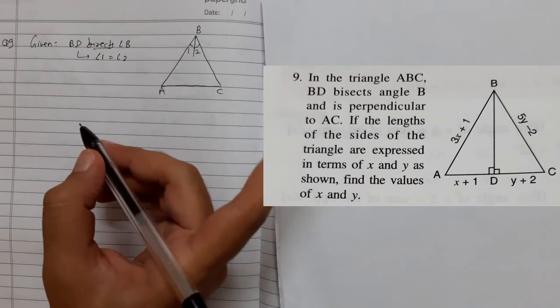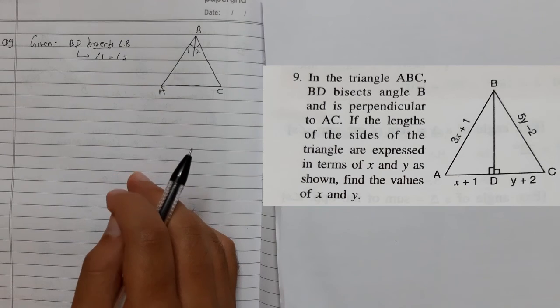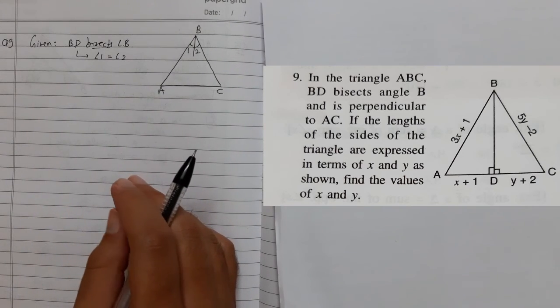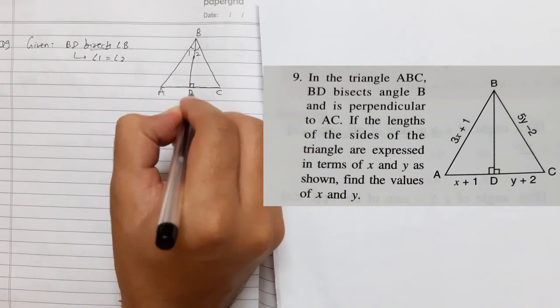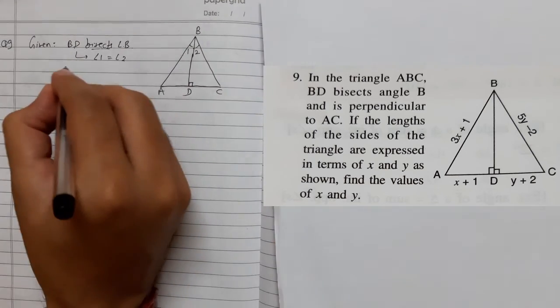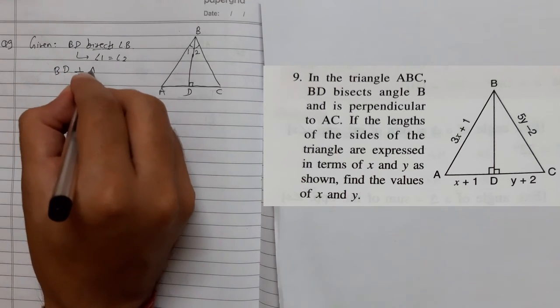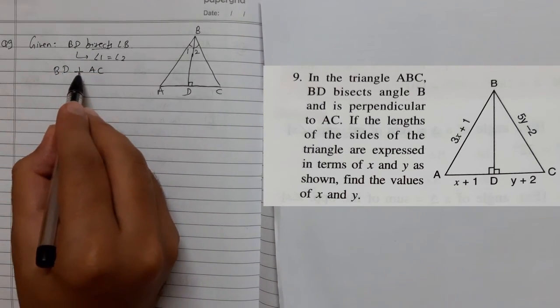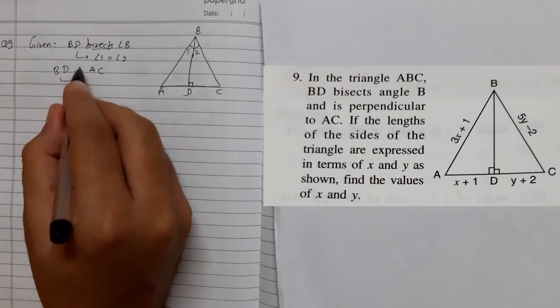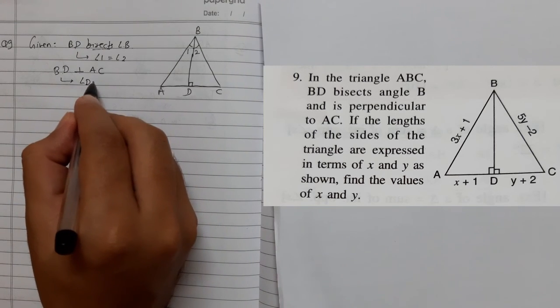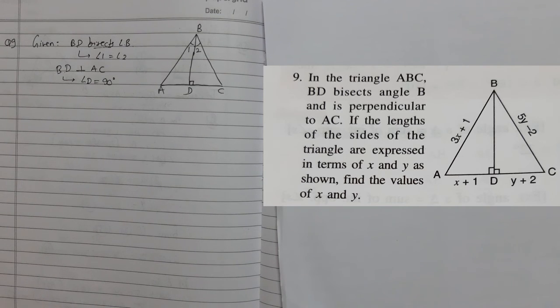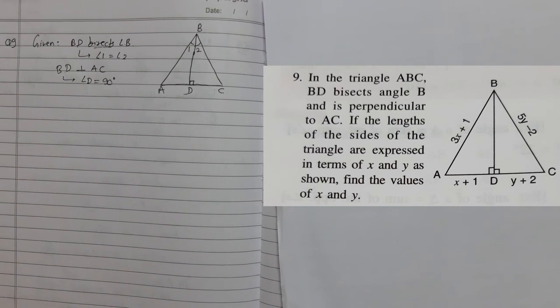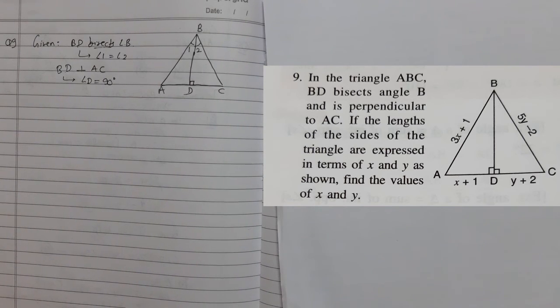Another thing which is given is BD is bisector of angle B and is perpendicular to AC. BD is perpendicular to AC means 90 degrees, so angle D equals 90 degrees. These are the two mathematical ways we should represent so that we can use the information for proving or solving the question.